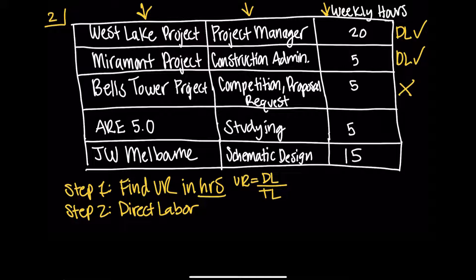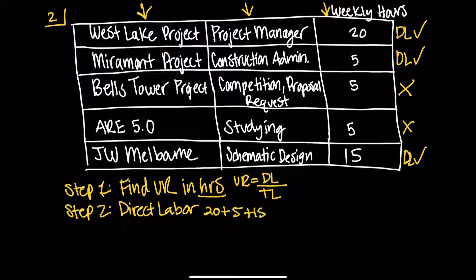Next: studying for the AREs — five hours that Jane put into studying for the AREs this particular week. This entire table is for weekly hours, so this is the total amount of hours Jane would put on all of her projects. Out of the week, she spends five hours studying for the AREs. Is there a client to charge to? Is this considered direct labor? No. And finally, project JW Melbourne: Jane worked in the schematic design phase and spent 15 of her total hours. Is schematic design billable? Absolutely. So we know what we need to add up to get our direct labor: 20 plus 5 plus 15. Total hours for direct labor equals 40 hours.